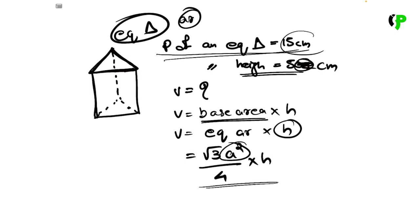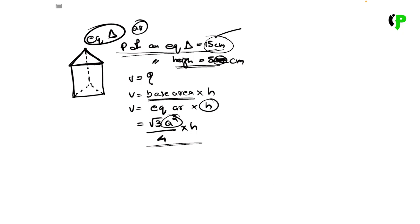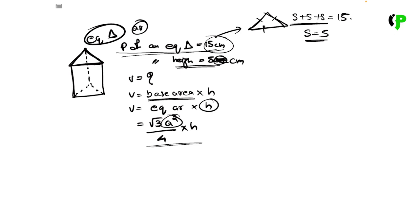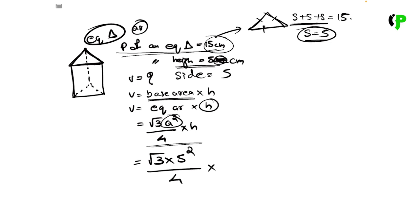The perimeter is 15 cm. An equilateral triangle has 3 equal sides, so side plus side plus side equals 15. Therefore, one side equals 5 cm. So we substitute a equals 5 into our formula.